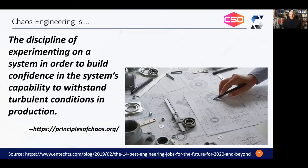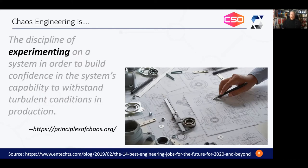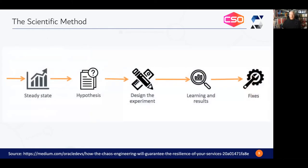It is a discipline, and chaos engineering is the discipline of experimenting on a system in order to build confidence in the system's capability to withstand turbulent conditions in production. Perhaps the phrase chaos engineering is entirely misleading, because the most important word in that definition — other than discipline — is experimenting. And that suggests the scientific method: we are going to approach the problem of injecting faults in a very controlled and precise manner.